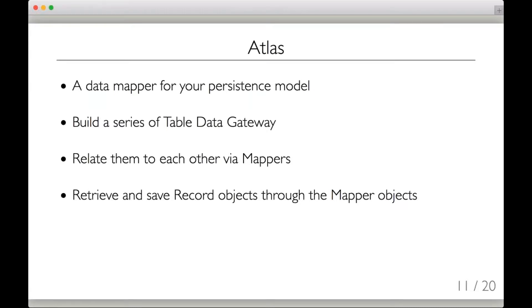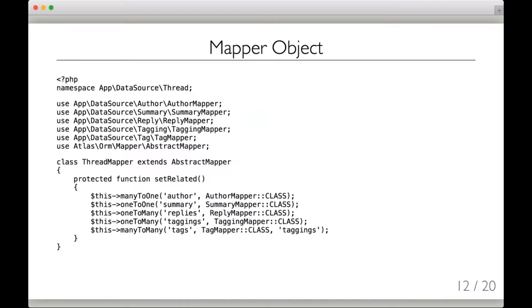Just as an example, here's what a mapper object looks like in Atlas. It's very straightforward. There's actually some command line tooling to help create this and the table data gateway for you. We can see there's a set-related method with many-to-one different kinds of relationships. We give it a field name that we want to use for that relationship, and then we say map that relationship through this other mapper class.